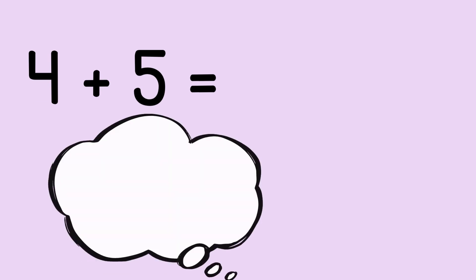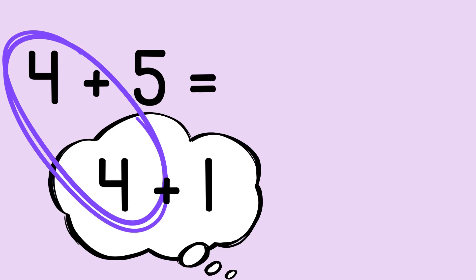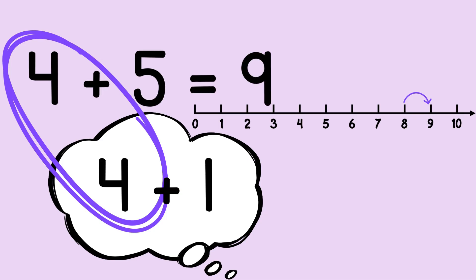Look at this. Here's four plus five. When I think about four plus five, I can think about how five is actually four plus one. And then do you see the double? Four plus four. I know that four plus four is eight. So four plus five is just one more than that. So if I go eight and I go up one more, then I get nine.